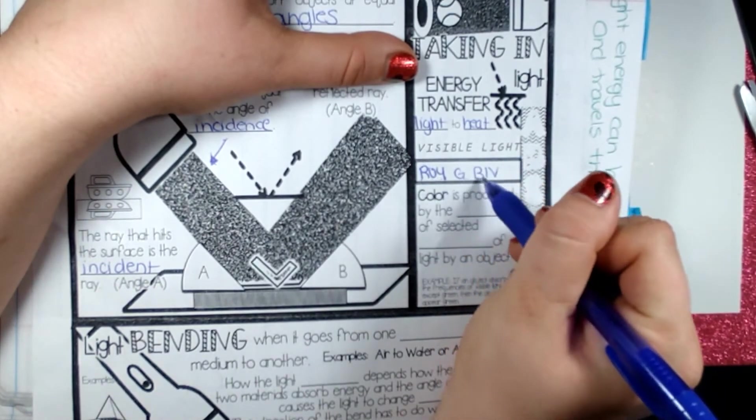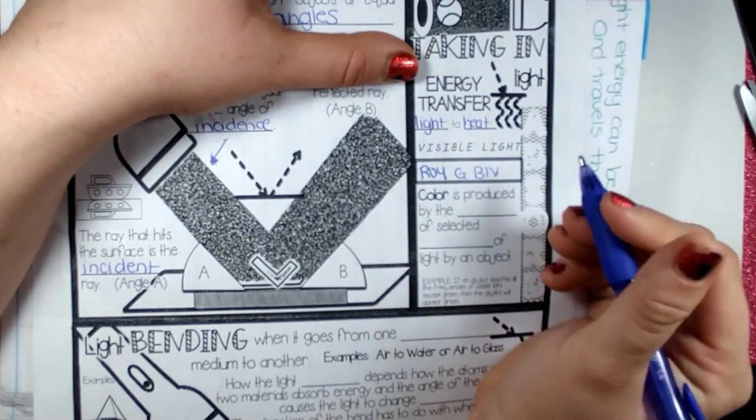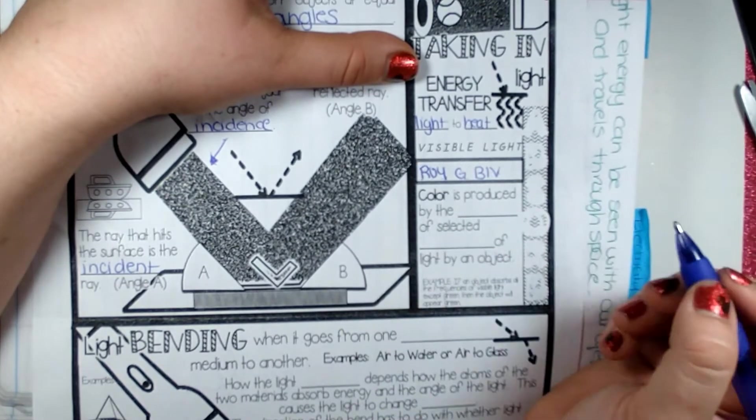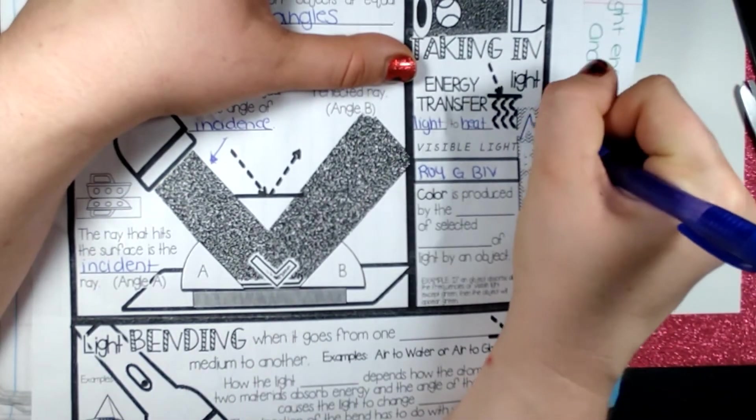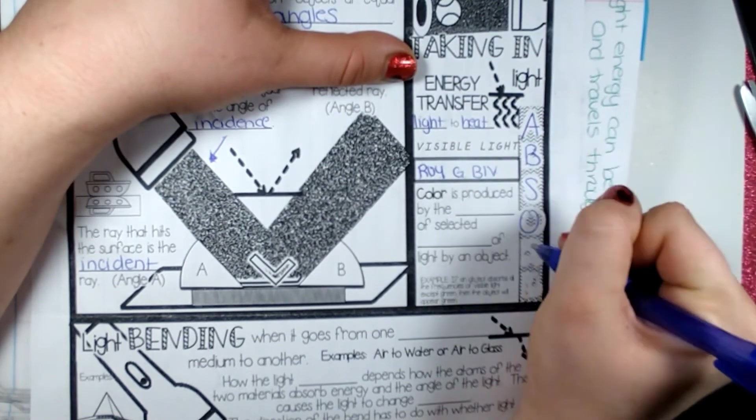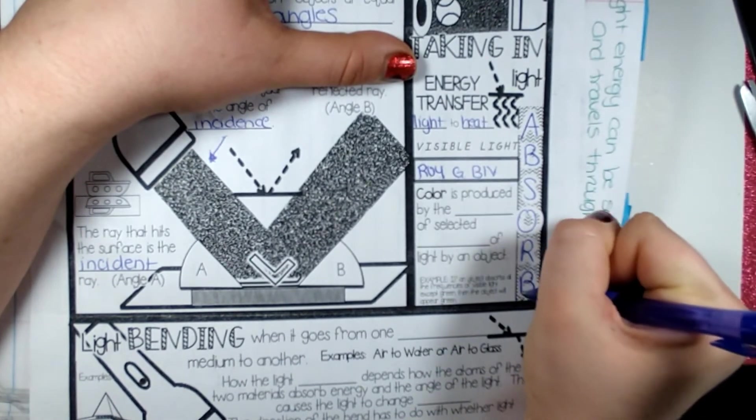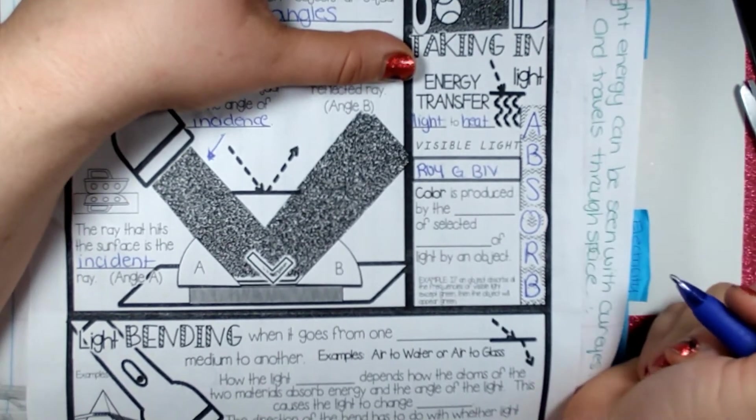When we do visible light, I would think of ROY G BIV for my ultraviolet light: red, orange, yellow, green, blue, indigo, and violet. This is my ultraviolet light. Okay, so this should say absorb. That didn't quite come out when we did our notes.